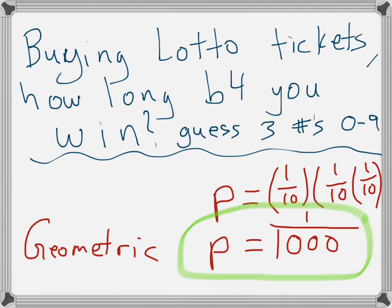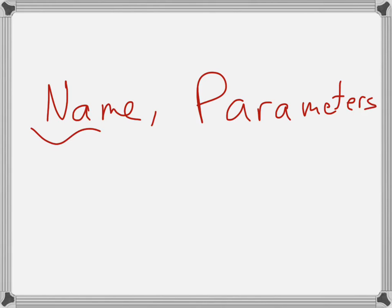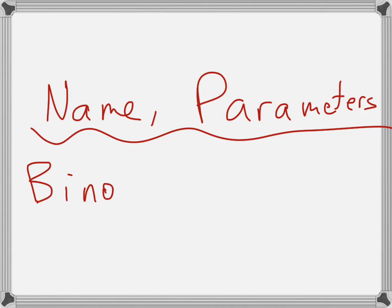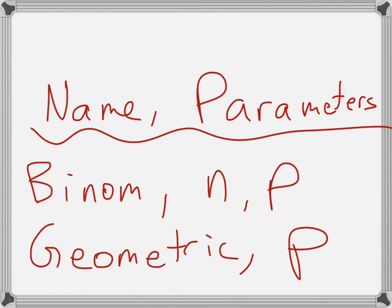Whenever you are creating or talking about a distribution, you need to state the name and then the parameters. For binomials, the parameters are N and P — the number of trials and the probability of success. For geometrics, the parameter is just P because N changes. Hopefully this video was helpful in understanding the differences between binomial and geometric distributions. The formative is essentially going to be identifying binomial distributions and then calculating the mean and standard deviation, which will be the next video.